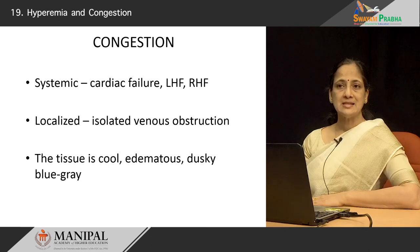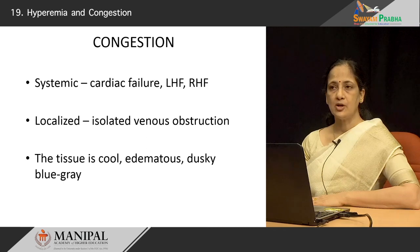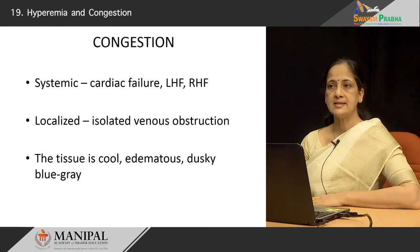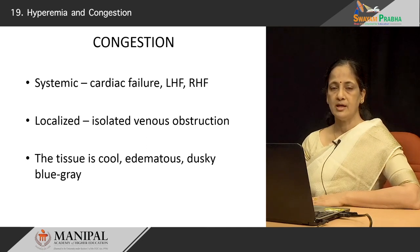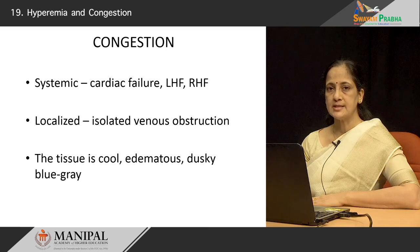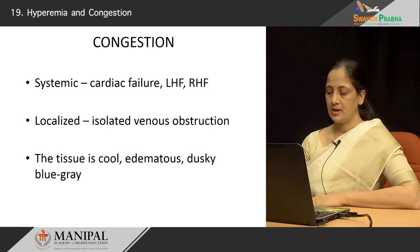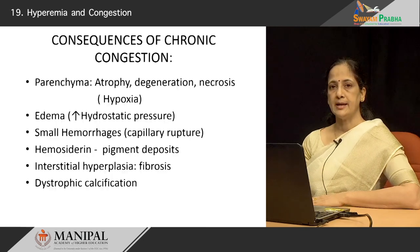Congestion can be systemic — for example, secondary to cardiac failure. If there is left-sided heart failure, we are going to see chronic venous congestion in the lungs. If there is right-sided heart failure, we are going to see systemic venous congestion. Localized chronic venous congestion can occur if a particular vein is obstructed — for example, if there is a deep venous thrombosis in the leg, the leg tissue will show features of chronic venous congestion. The affected tissue is usually cool, edematous, dusky, and blue-gray in color.